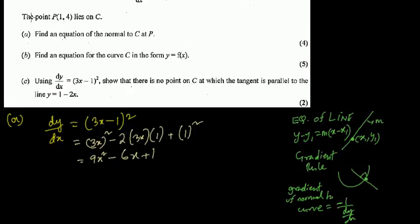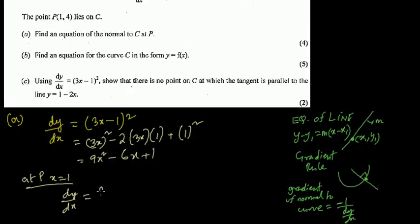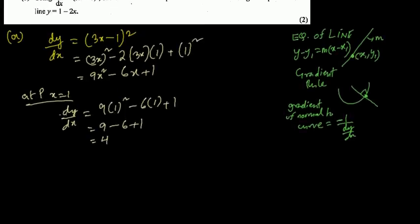At point P, the x-coordinate is 1, so the gradient dy/dx equals 9(1)² - 6(1) + 1, which is 9 - 6 + 1 = 4. So the gradient of the curve at P is 4.